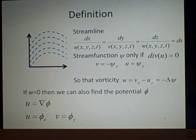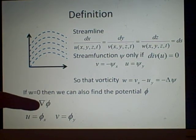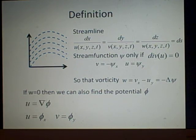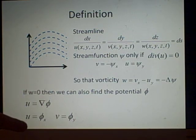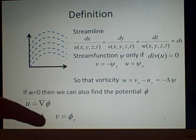If we have the velocity is zero, so v_x minus u_y is zero, then we can also find the potential function. This is defined here as u is grad psi. Here it's quite simple: we just let u equal psi_x and v equals psi_y.